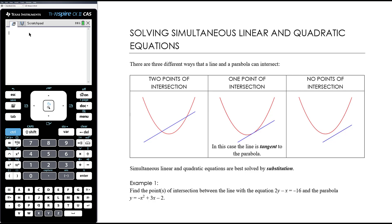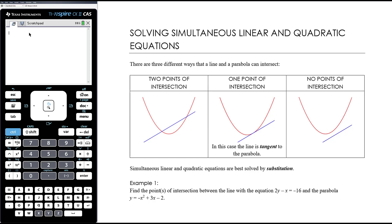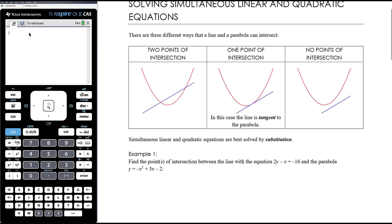We could have two points of intersection, where the line crosses the parabola twice, such as the example we're seeing here on the left. We could have one point of intersection, and in this case the line is tangent to the parabola. There is an exception: if we have a vertical line, there is only one point of intersection as well, and that's not a tangent.